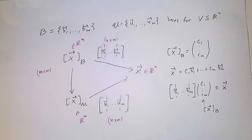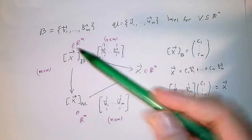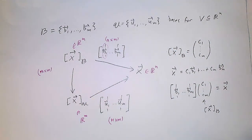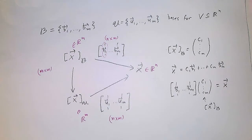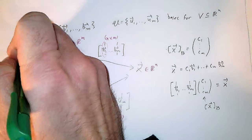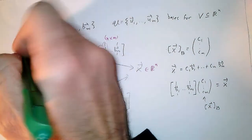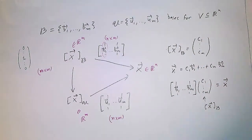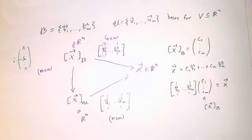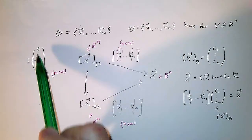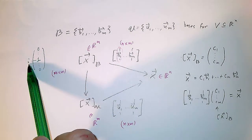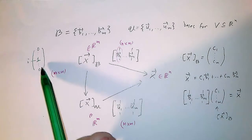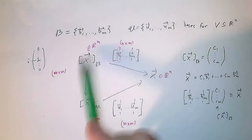Now let's think about the matrix we were originally wondering about — the one that converts the coordinate vector with respect to B to the coordinate vector with respect to U. It would have to change an M-dimensional vector into another M-dimensional vector, so we're looking for an M×M matrix. To find the matrix for a linear transformation, we pay attention to what happens to a very particular vector.